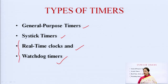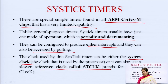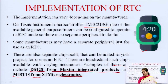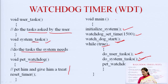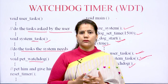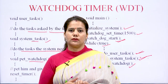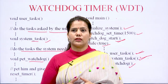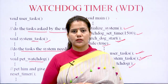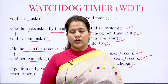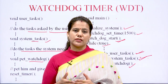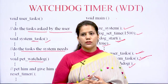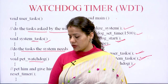We covered all four types of timers: general purpose timers, SysTick timers, real time clock, and watchdog timers, going into detail on real time clock and watchdog timers. In subsequent lectures we will study different schemes of networking used in embedded systems, as communication between different devices is very important.